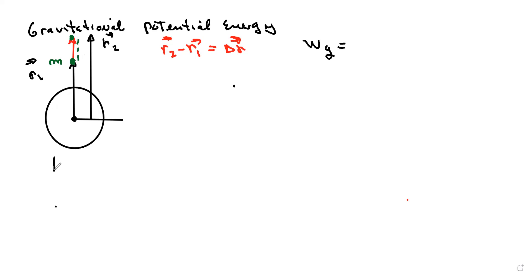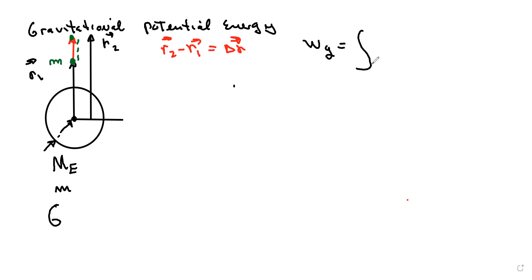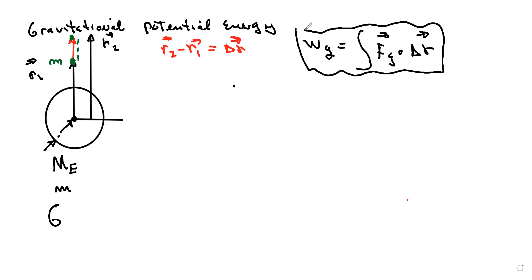We have the mass of the Earth, concentrated at the center, the mass of the little particle, and the gravitational constant G. The work done by gravity is the integral of the force of gravity dot product with delta r — this is the definition of work done by any force.